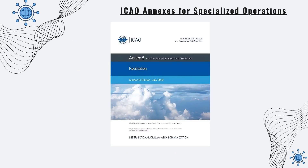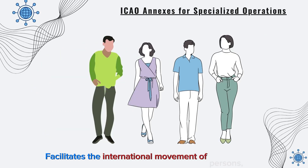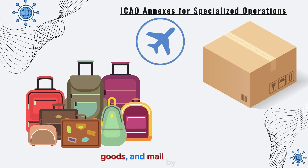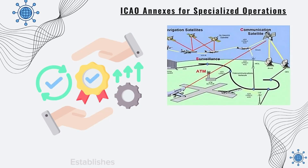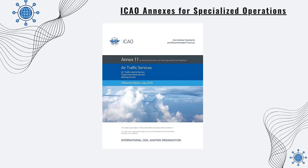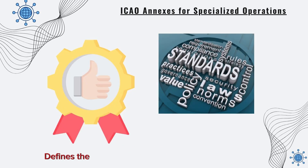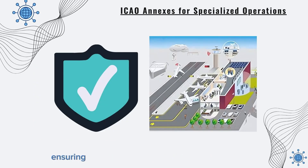Annex 9, Facilitation, facilitates the international movement of persons, goods, and mail by air. Annex 10, Aeronautical Telecommunications, establishes standards for aeronautical telecommunication systems and procedures. Annex 11, Air Traffic Services, defines the standards and recommended practices for air traffic services, ensuring the safe and efficient flow of air traffic.